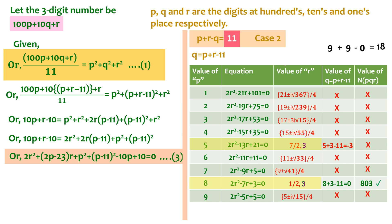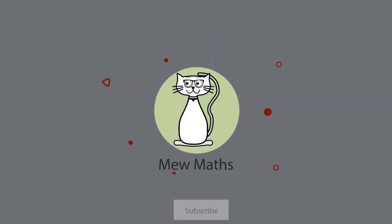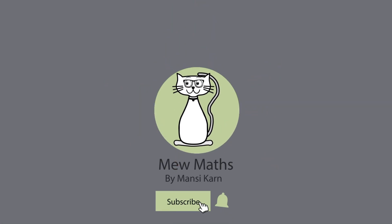So we got two numbers — 550 and 803 — which satisfy the conditions given in the question. Having said this, we have solved our question. Stay tuned for more videos on Olympiad, and do leave a comment for suggestions and opinions.